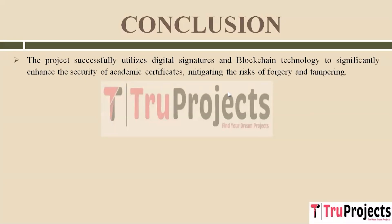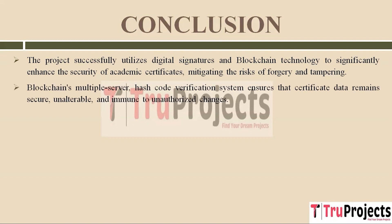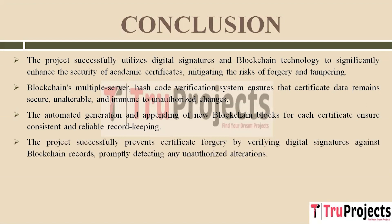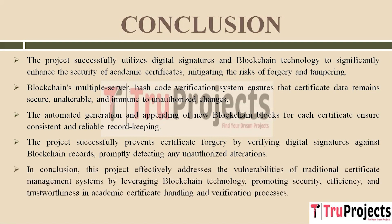In conclusion, this project boosts the security of academic certificates by using digital signatures and blockchain technology, reducing the risk of forgery and tampering. With blockchain's multiple-server and hash code verification system, certificate data remains secure, unchangeable, and immune to unauthorized changes. The project automatically creates and adds new blocks in the blockchain for each certificate, ensuring consistent and reliable record keeping. By checking digital signatures against blockchain records, the project swiftly detects any unauthorized changes, effectively preventing certificate forgery. This project addresses the weaknesses of traditional certificate management systems by harnessing blockchain technology to promote security, efficiency, and trustworthiness in academic certificate handling and verification.